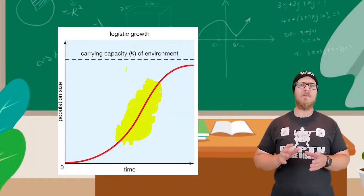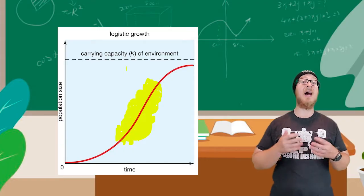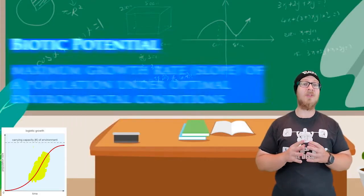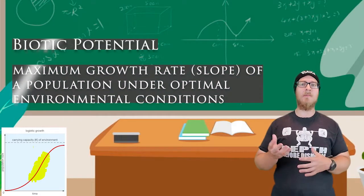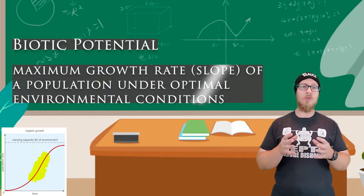The area of the logistic curve that I highlighted in this graph is the biotic potential, or the maximum growth rate of a population under optimal environmental conditions. Usually, there will always be some portion of a population's growth that is exponential.